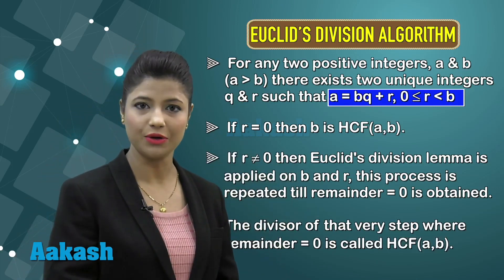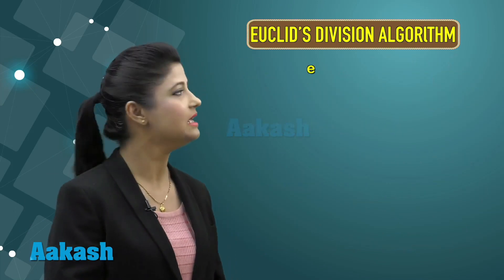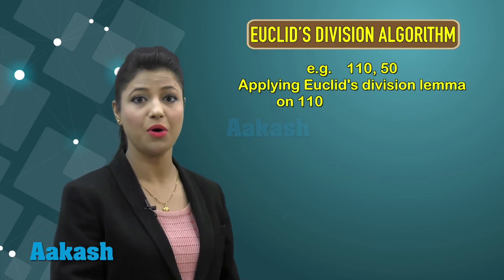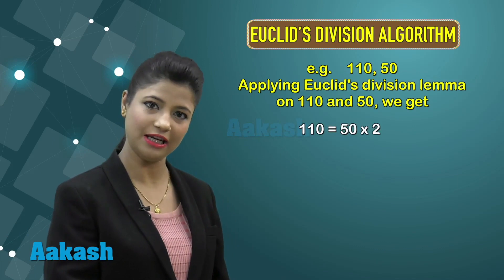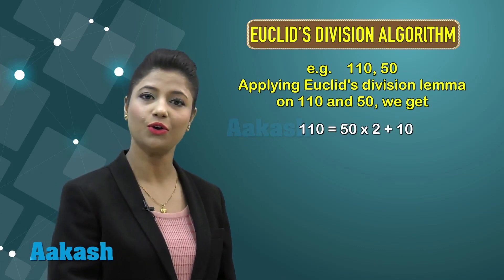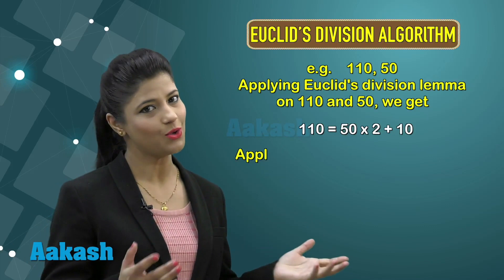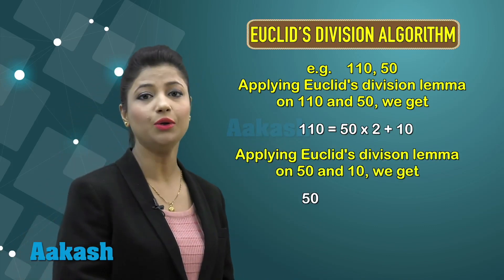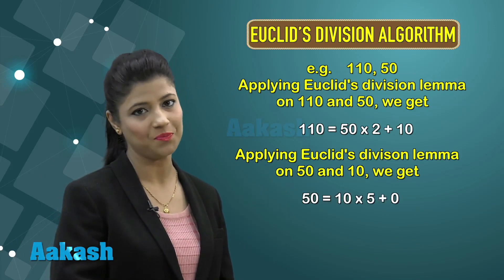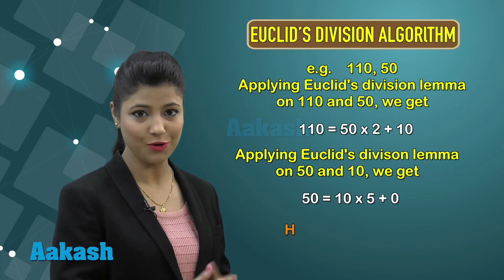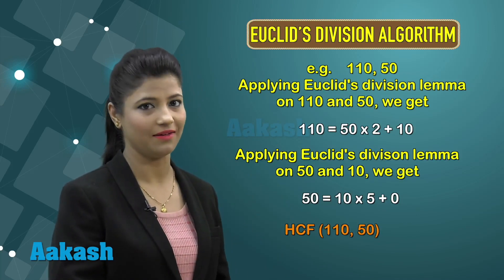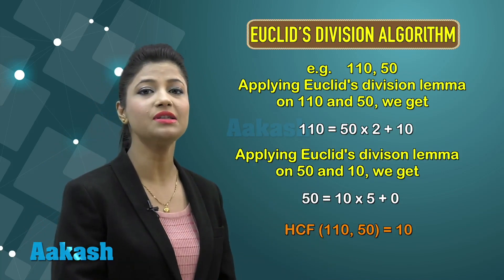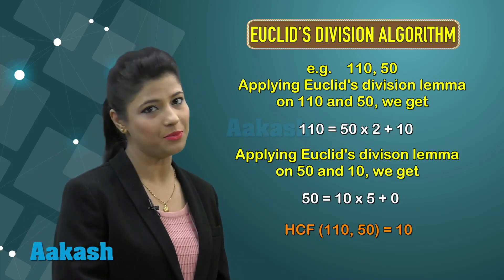For example, with two numbers 110 and 50: applying Euclid's division lemma gives 110 = 50 × 2 + 10. The remainder is 10, which is non-zero, so we apply the lemma again on 50 and 10, giving 50 = 10 × 5 + 0. This time the remainder is 0, so the divisor of this step — 10 — is the HCF of 110 and 50.